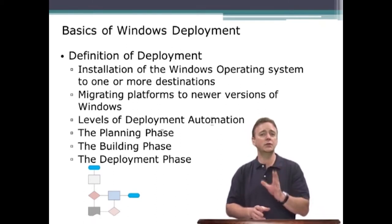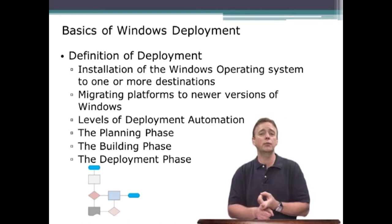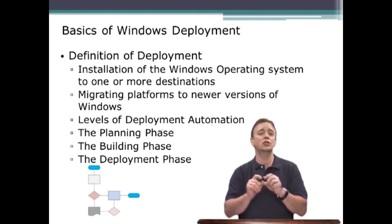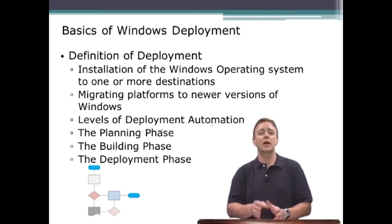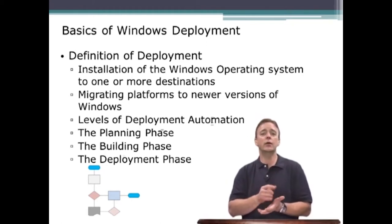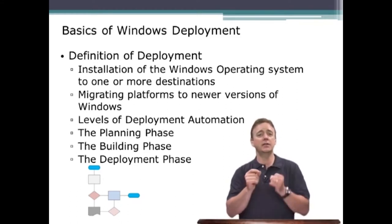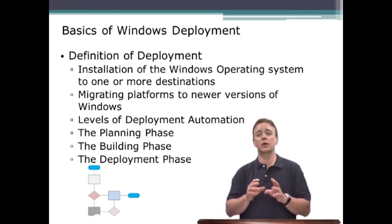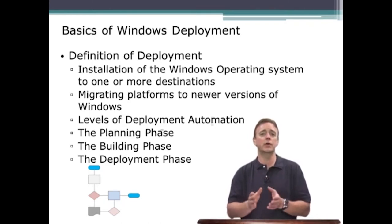As far as levels of automation, there are at least three we're going to look at. First is manual deployment — which doesn't mean starting from scratch with install from media, but rather going to the machine, having it connect and get an image, and booting up. It's still faster than installing from original media, but it is the slowest form of automation. There's also light touch and zero touch, which we'll look at as well.